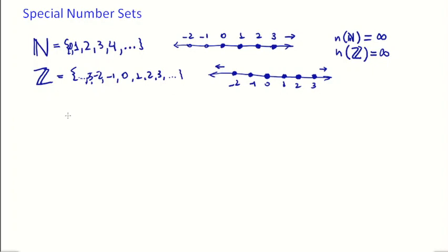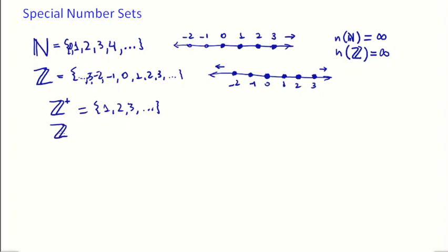We also have a slight variation of the integer number set. We have ℤ⁺, which is only the positive integers — everything in ℤ but only the positive ones. The difference from natural numbers is that zero is not included here, because zero is neither positive nor negative. Similarly, ℤ⁻ would be negative one, negative two, negative three, and so on — all negative integers.